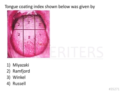The question here is about the tongue coating index shown below. What we need to remember is that the tongue is the most important source of halitosis in the oral cavity, because there is easy deposition of debris as well as plaque on the tongue.